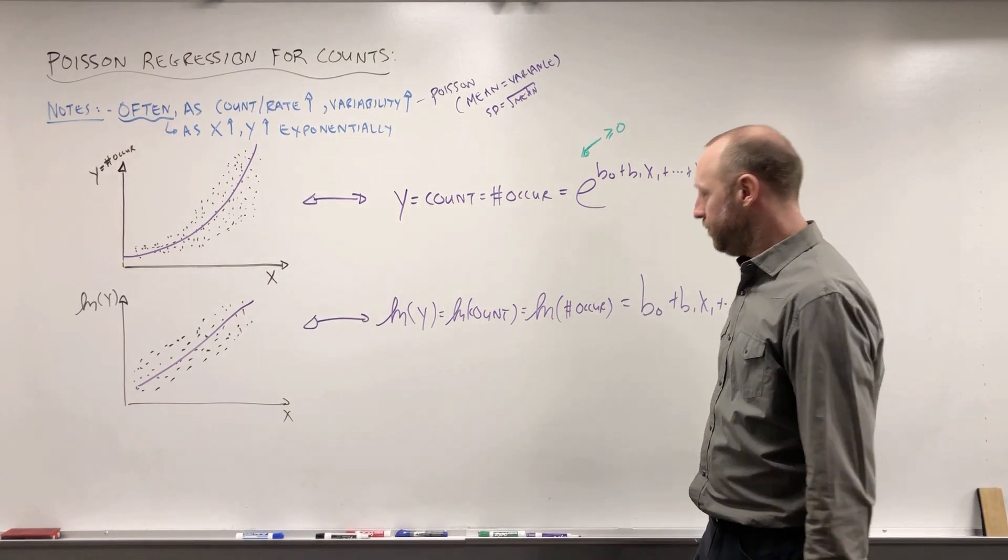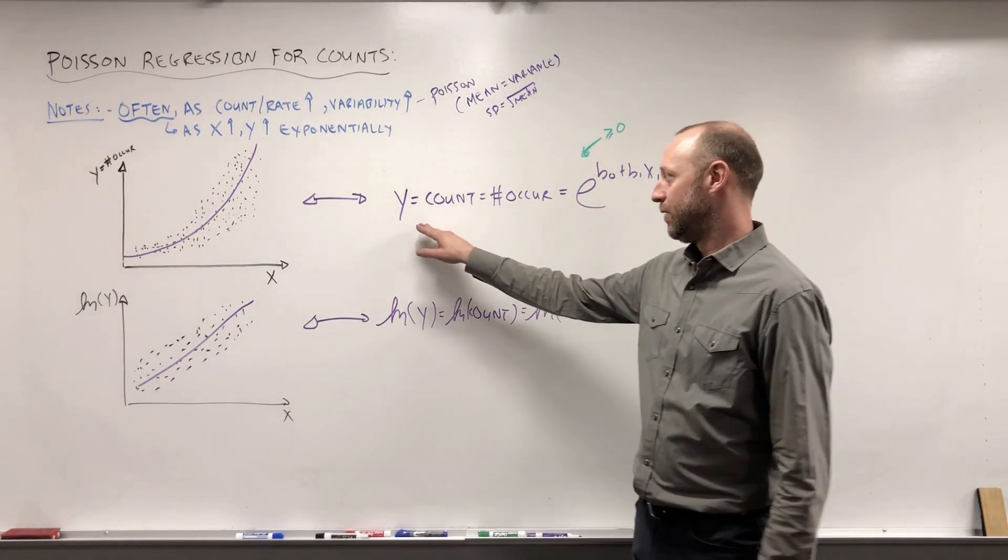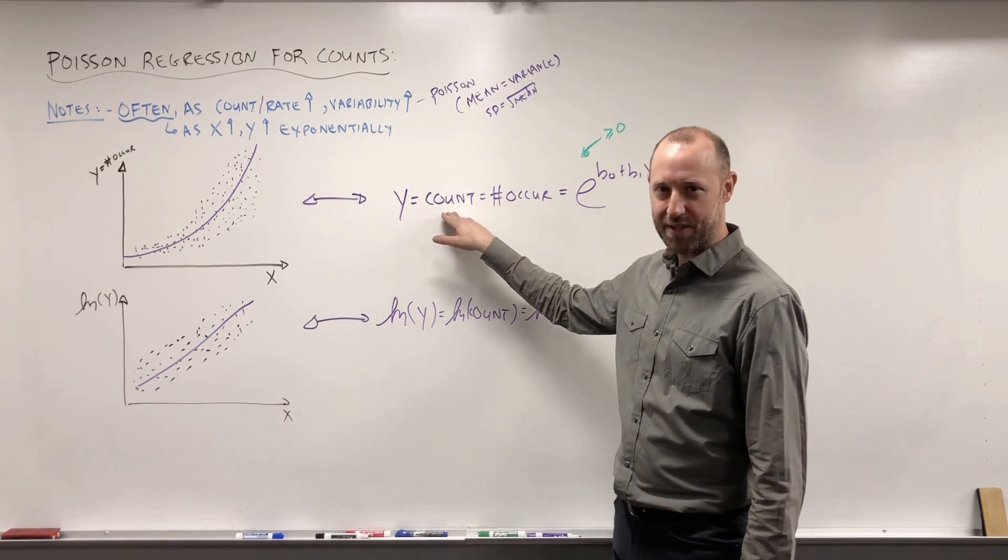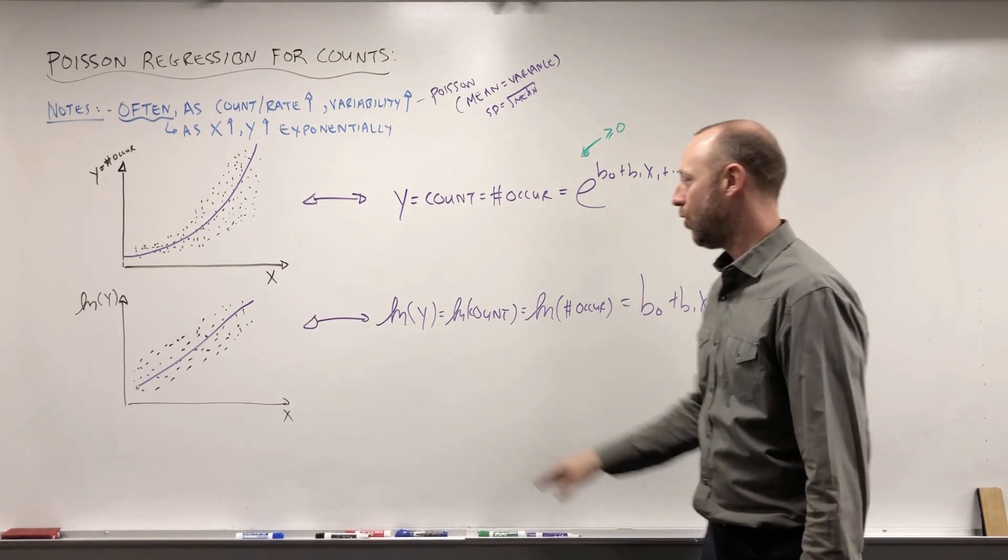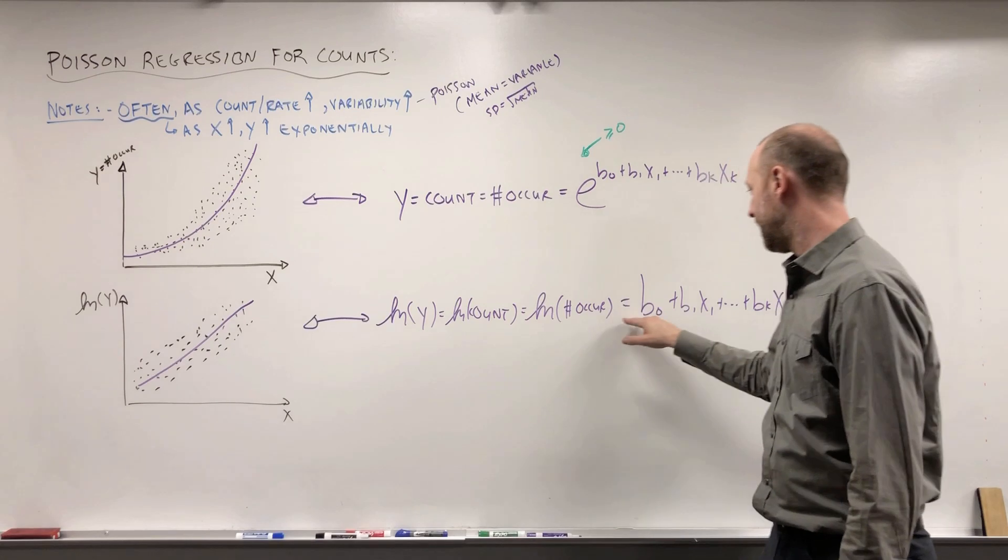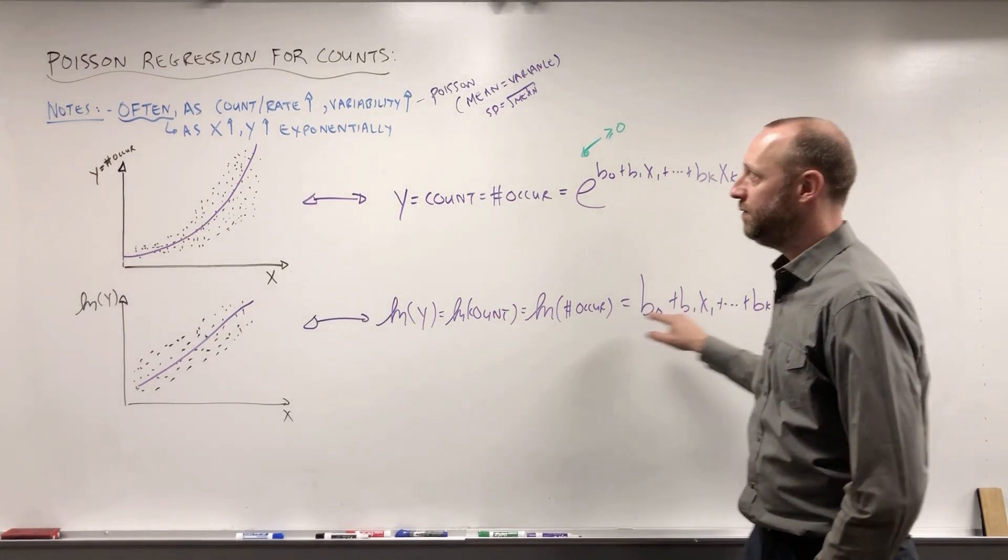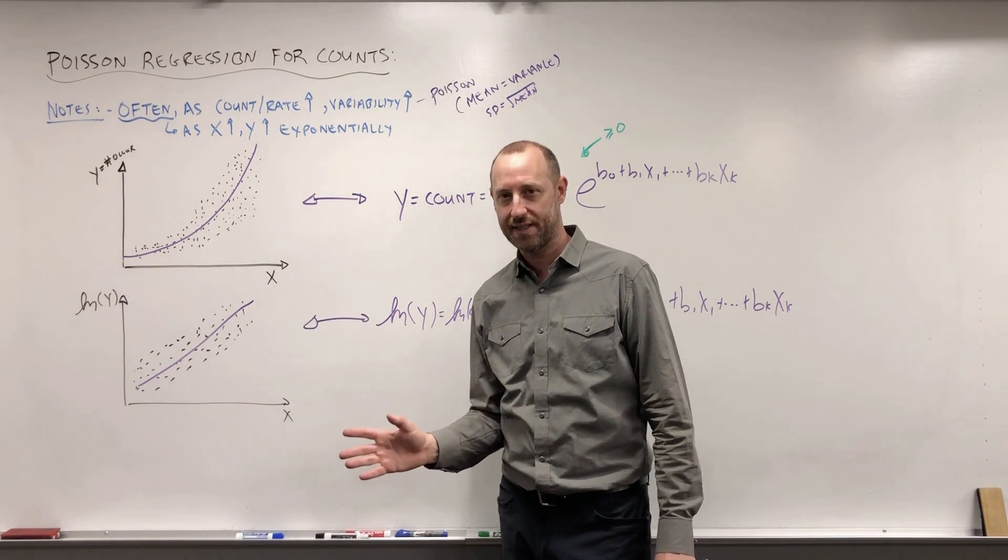So, this is the Poisson regression model, kind of in a quick snapshot. We're going to model the number of times the event occurs as an exponential function of the x variables, or we can think of it as we're modeling the log number of times the event occurred as a linear function of the x's. And this is all for count data, where all the individuals have been followed for the exact same amount of time.